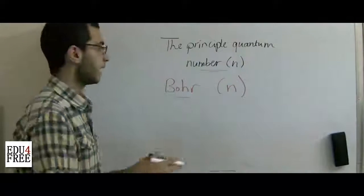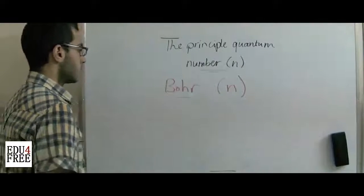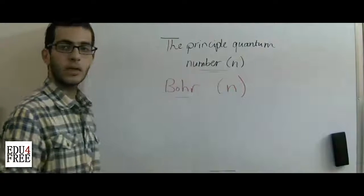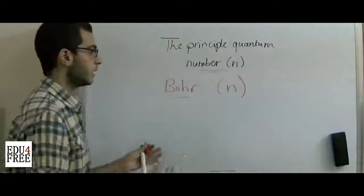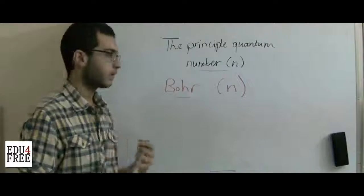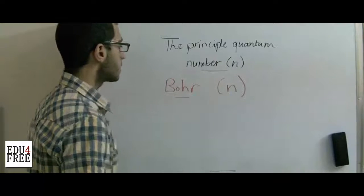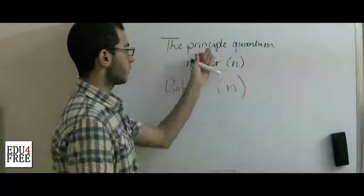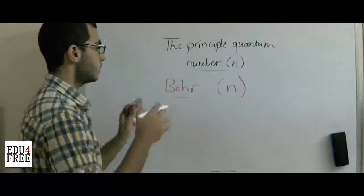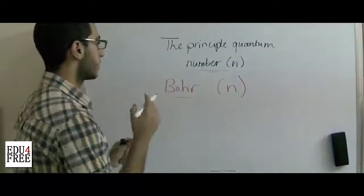This small n is used to describe the number of energy levels in a certain atom. For example, in the hydrogen atom n equals one because there is only one energy level. This is the first use of the principal quantum number — to describe the number of energy levels in an atom.